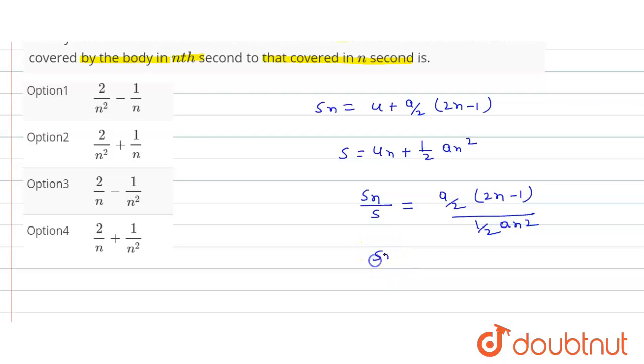So the ratio Sn upon s will be how much? 2 upon n minus 1 upon n square. 2 upon n minus 1 upon n square. Option C is the correct option.